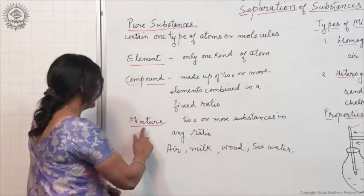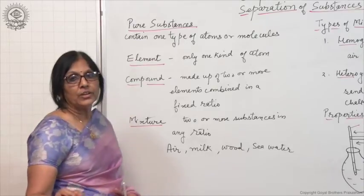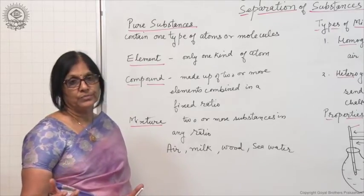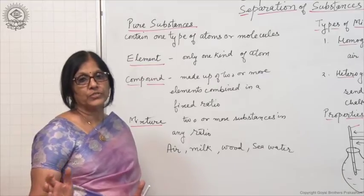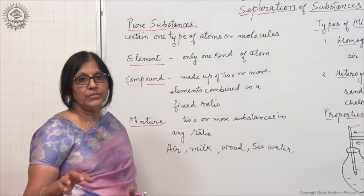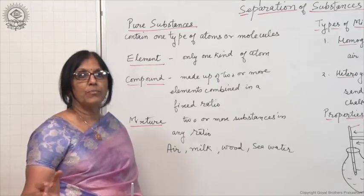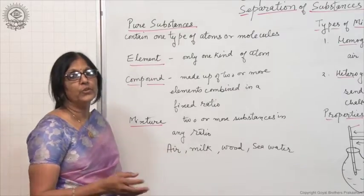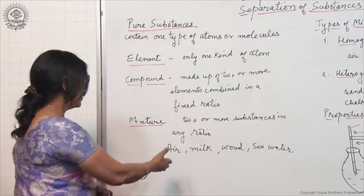Then what is a mixture? In a mixture, two or more substances are mixed in any ratio. The ratio cannot be fixed—two elements or two compounds or elements and compounds are mixed together in any ratio and a mixture forms. There are so many naturally occurring mixtures like air.